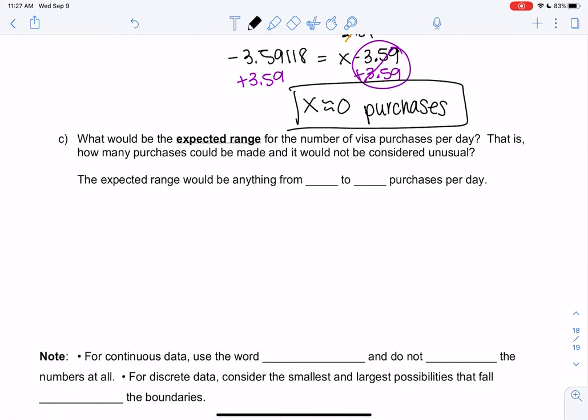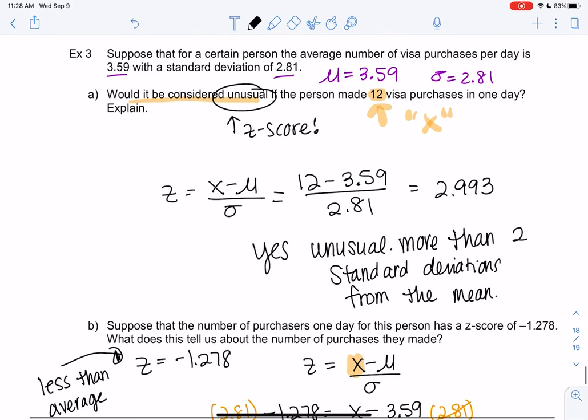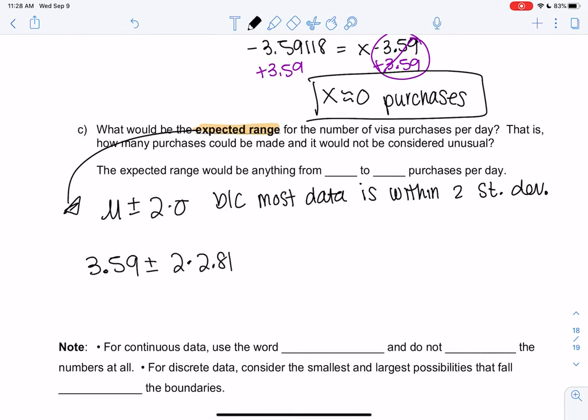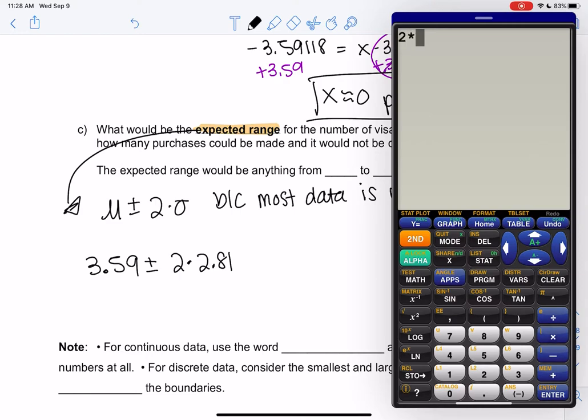Expected range—does anybody remember the formula? That would be the mean plus or minus two standard deviations because most of the data is within two. I'm going to write this out because that'll help us remember the formula better. We're going to take the average of 3.59 plus or minus two times 2.81. This tells us where most of the data lies. It tells us how many purchases are considered usual versus unusual.